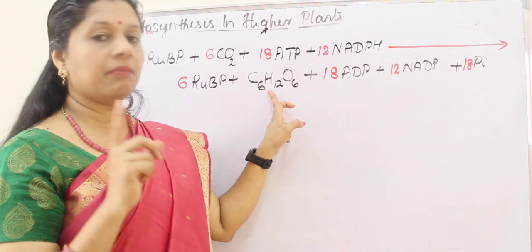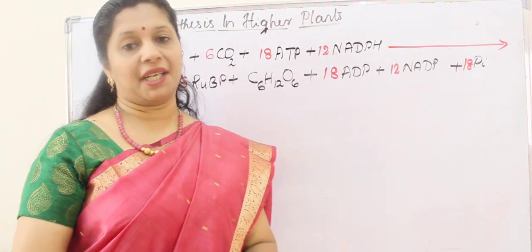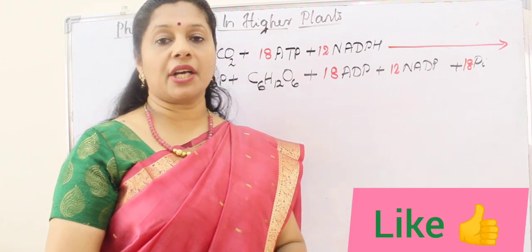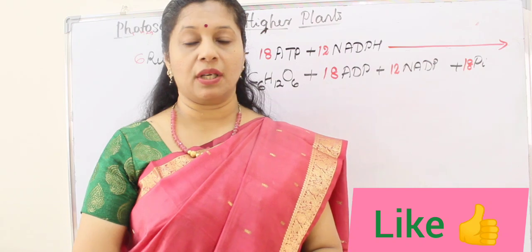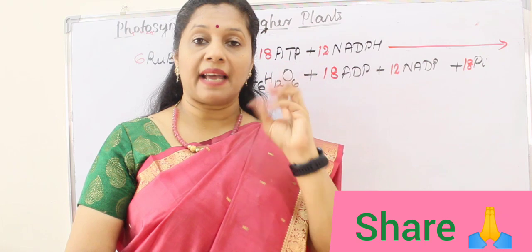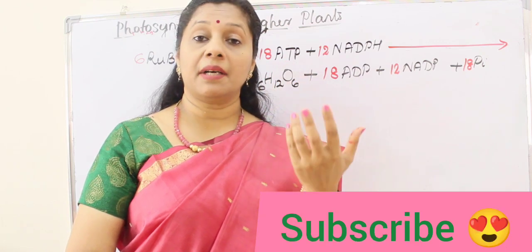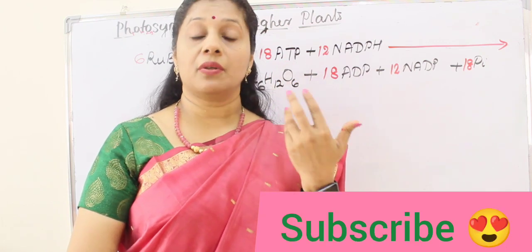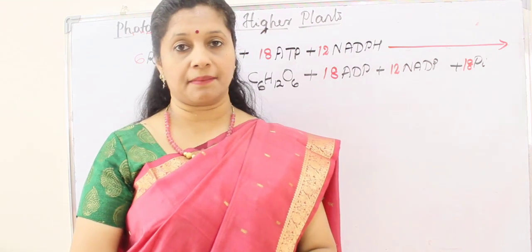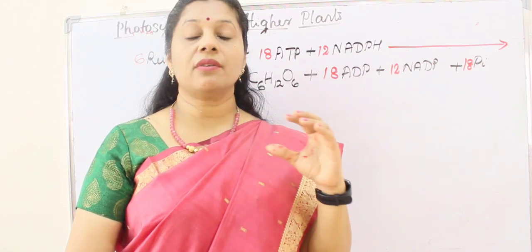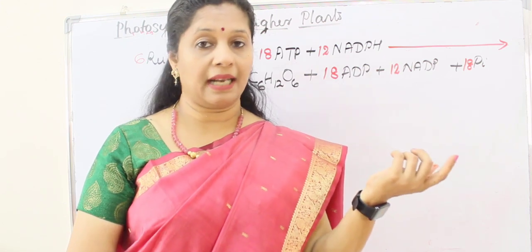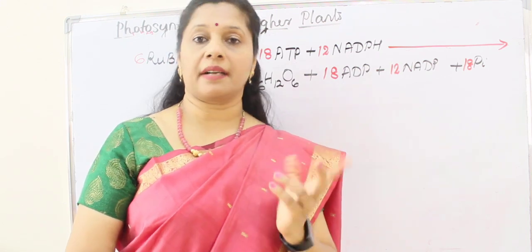For one molecule of glucose, 6 molecules of CO2 are needed. Interestingly, flashing light produces a higher rate of dark reaction and CO2 fixation than continuous light. This shows that the rate of photosynthesis is controlled by the dark reaction, not the light reaction — making the dark reaction the rate-limiting step of photosynthesis.